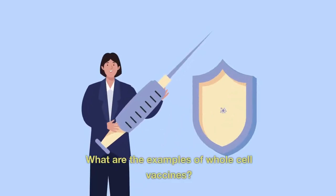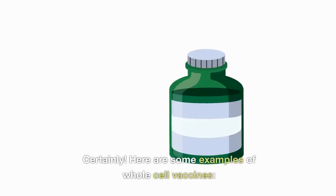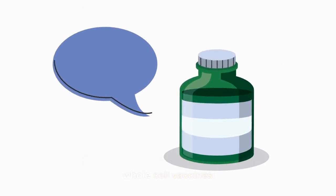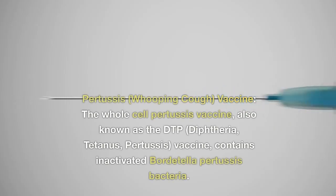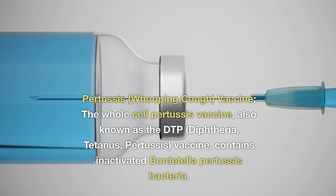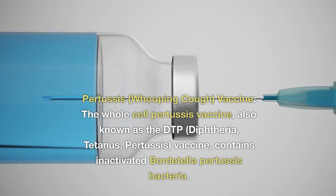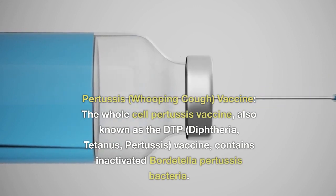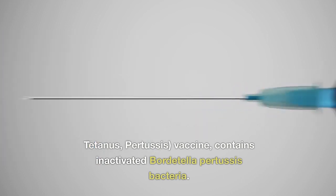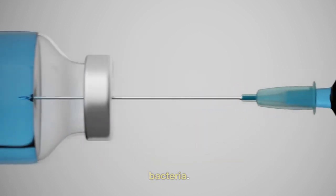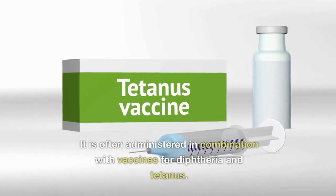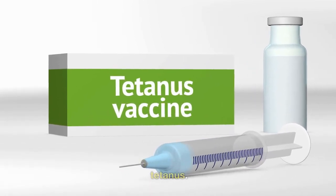What are the examples of whole cell vaccines? Here are some examples. The pertussis vaccine: the whole cell pertussis vaccine, also known as the DTP — diphtheria, tetanus, pertussis — vaccine, contains inactivated Bordetella pertussis bacteria. It is often administered in combination with vaccines for diphtheria and tetanus.